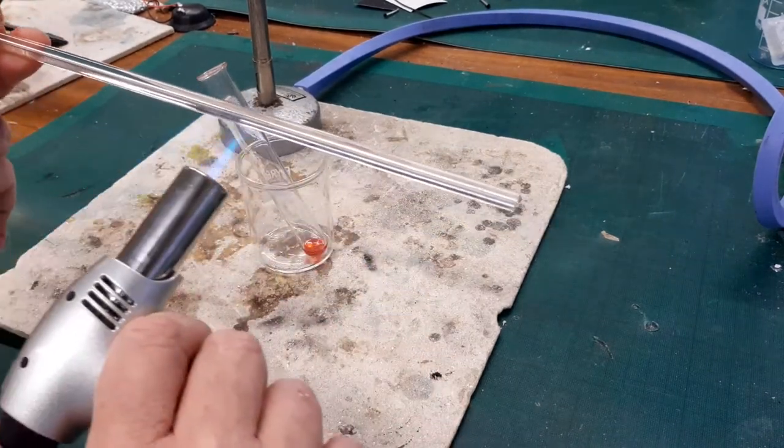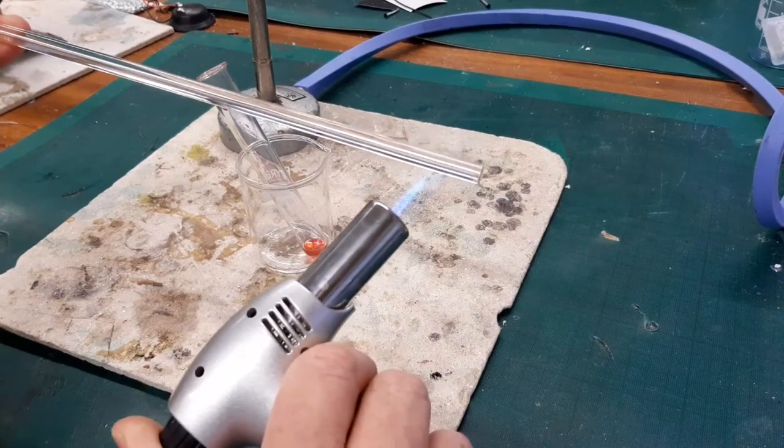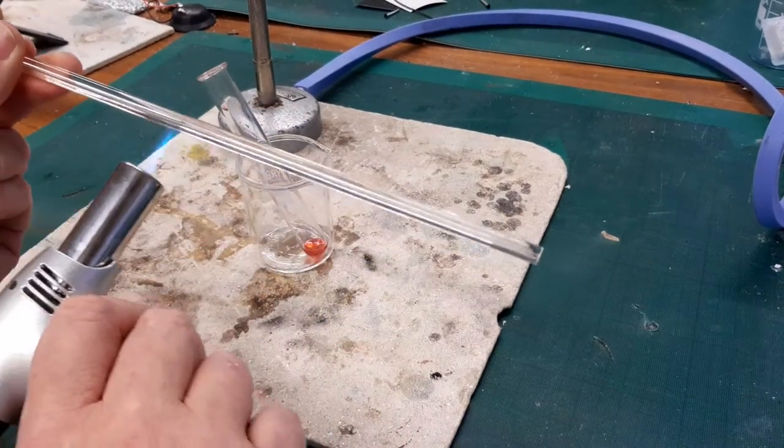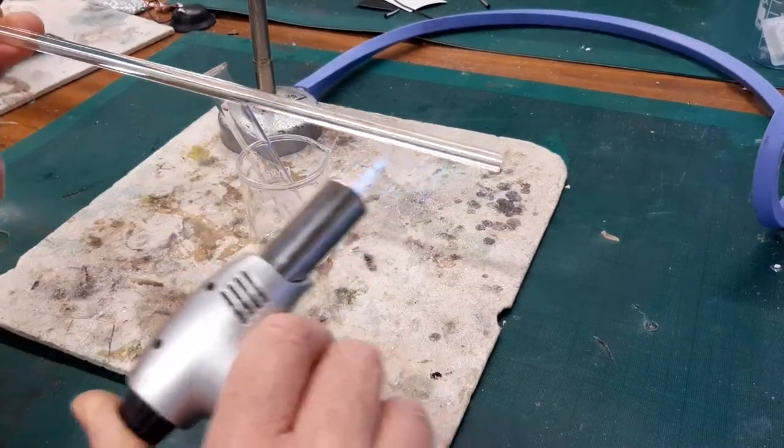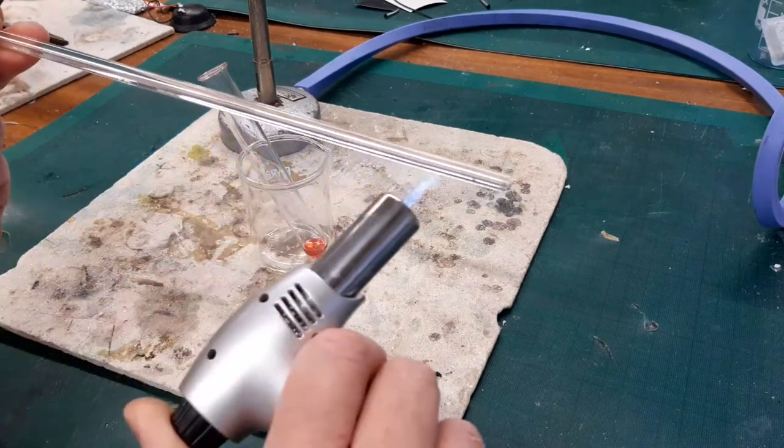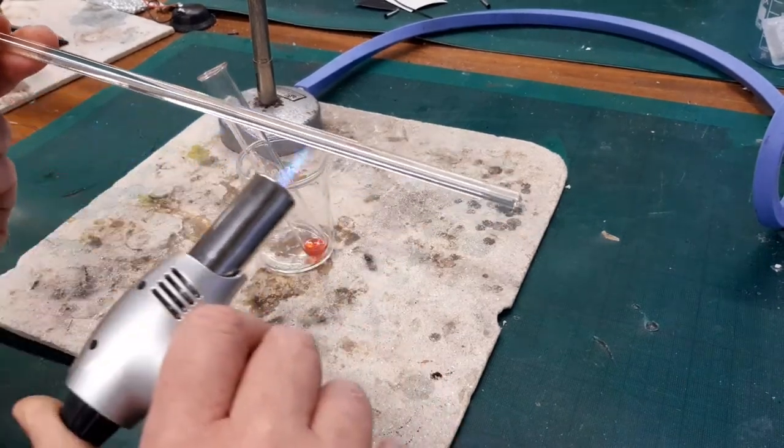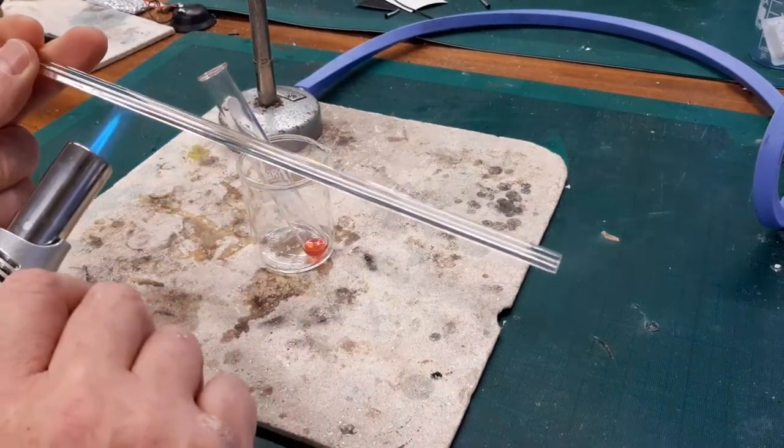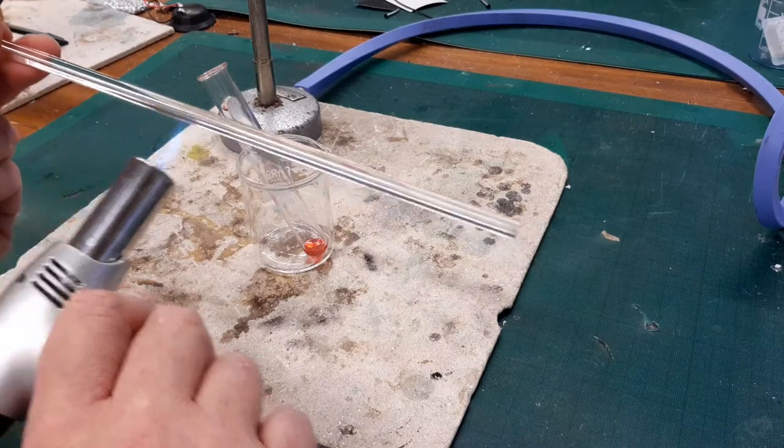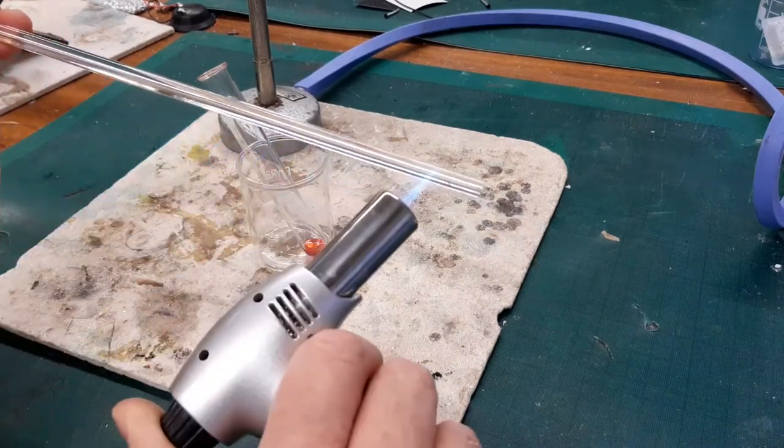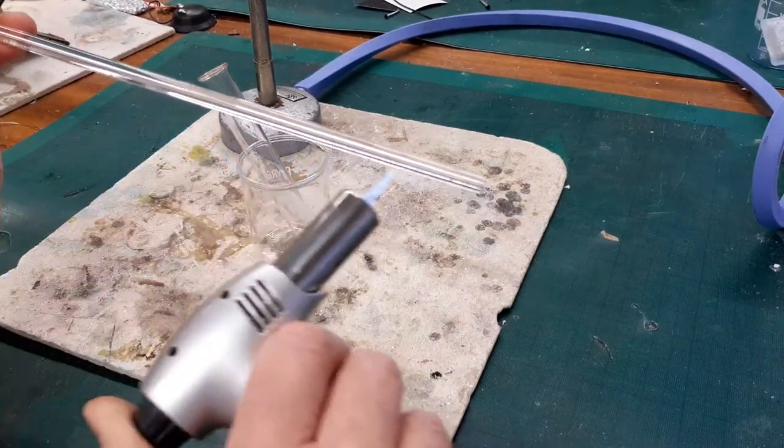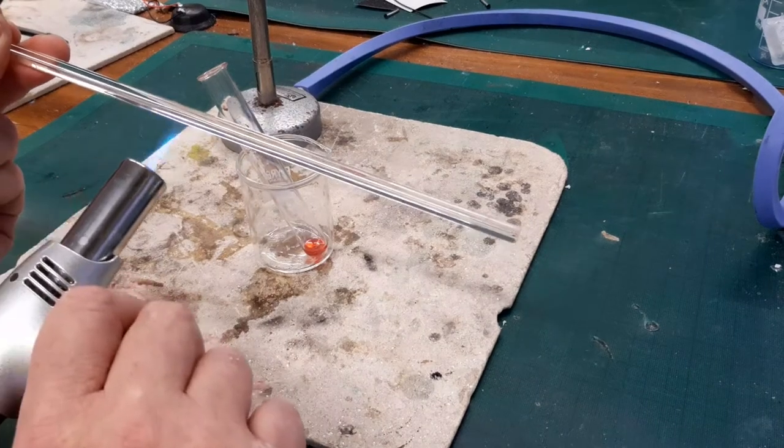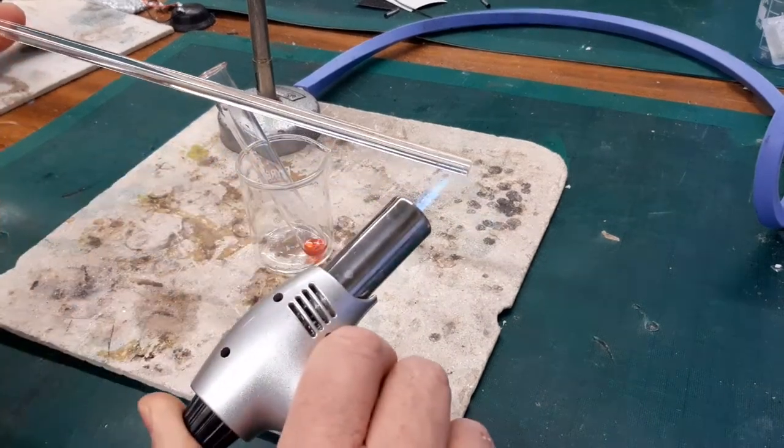You could of course do this with a Bunsen or even using a paint stripper gun, but this cook's torch I find is probably one of the easiest to use. As soon as I start feeling any warmth on my fingers I know that I'm probably getting too hot, but it will take a fair amount of heating.